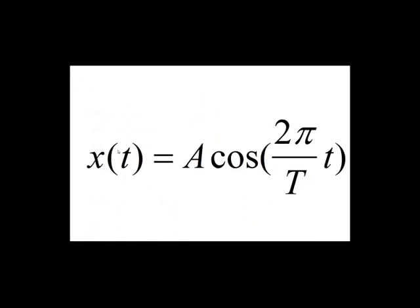This type of oscillatory motion is called sinusoidal motion and can be described by a cosine function, where x is the displacement from equilibrium, A is the amplitude of oscillation, capital T is the period of oscillation, and little t is the time.